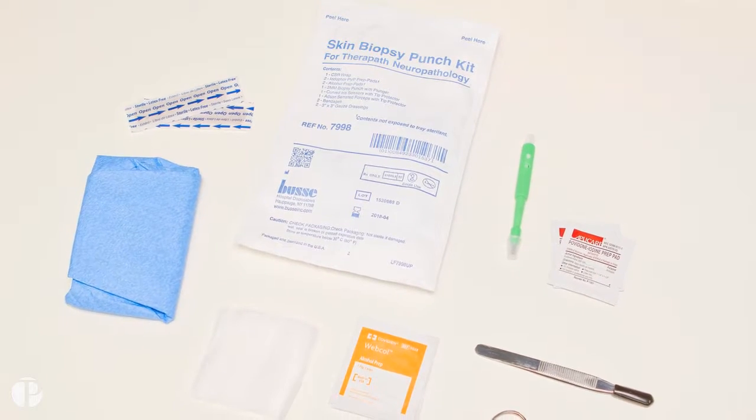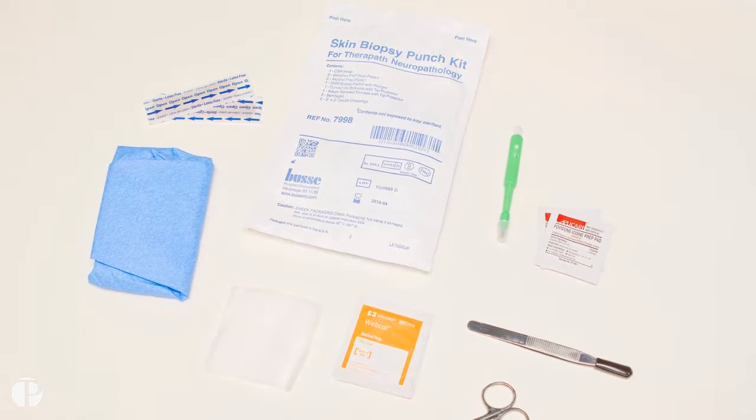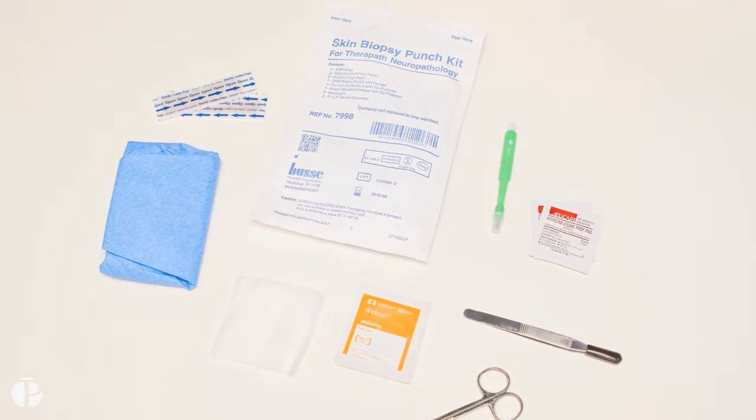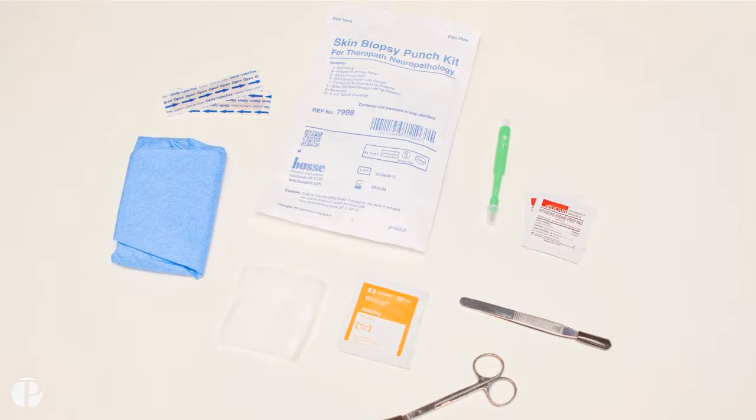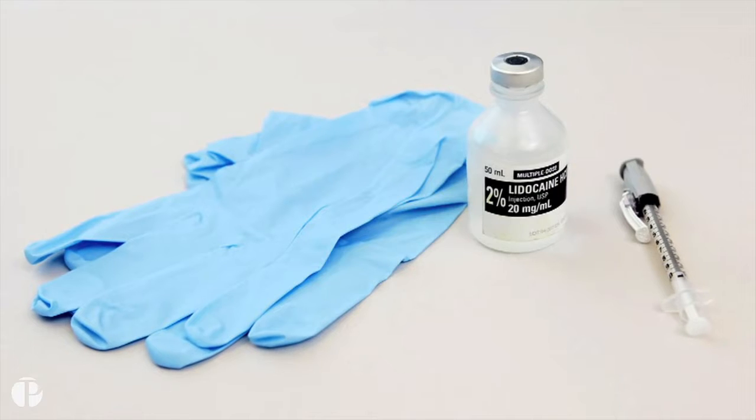The sterile skin biopsy punch kit contains adhesive bandages, forceps, a punch tool, scissors, alcohol swabs, iodine swabs, and gauze. You will need to provide gloves, 2% lidocaine with epinephrine, and an injecting needle.